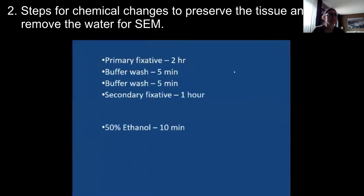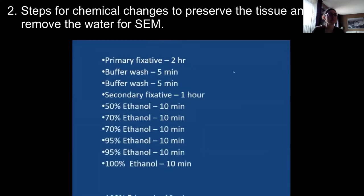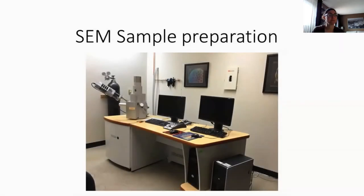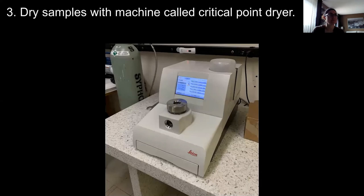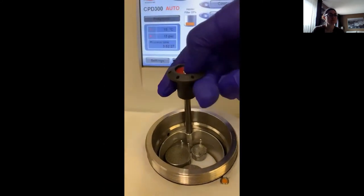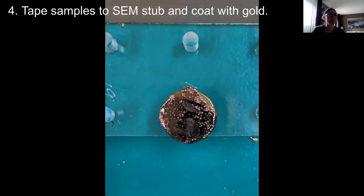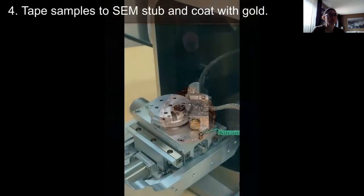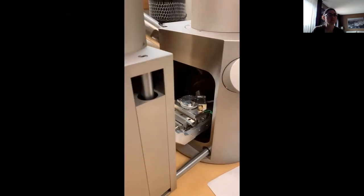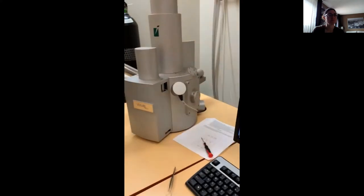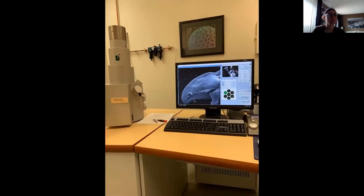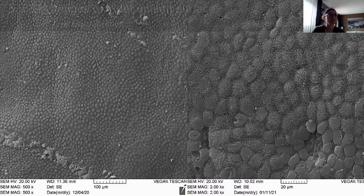After fixation, I make several more chemical changes to further preserve the tissue, then slowly remove all the water and replace it with a solvent like ethanol. To study the tissue surface with a scanning electron microscope, I put tissue pieces into a critical point dryer, which slowly removes all the solvent without collapsing the structure. After drying, I tape the tissue to a stub, coat it with a thin layer of metal like gold, and put it into the SEM chamber. Once the air is pumped out, I can turn on the electron beam and examine the surface.